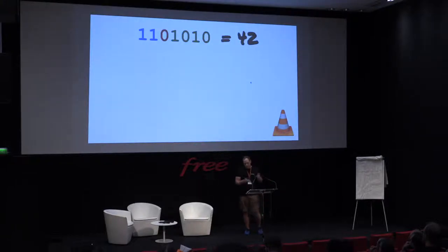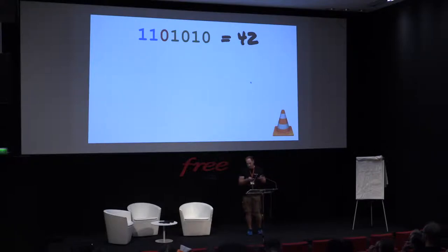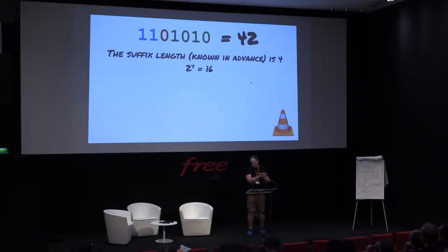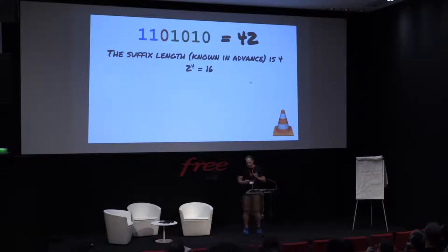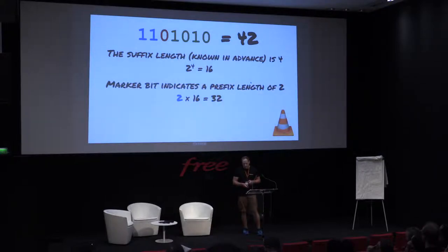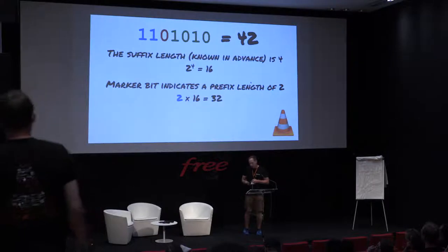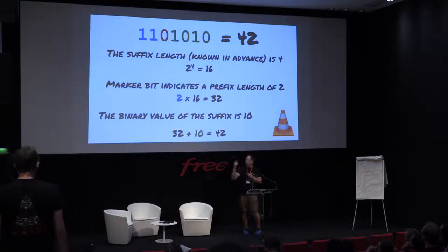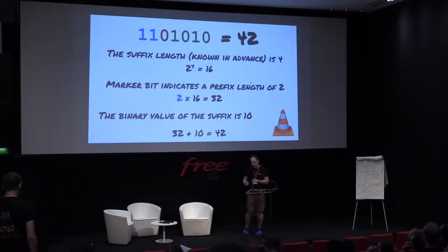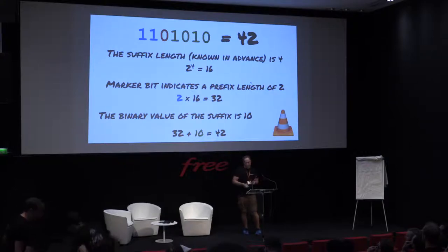With an example: if you start with the code 42, what happens is you get your two one-bit prefix bits, and then your marker bit. You know you have two to the four, which is 16, which is going to be your quotient. Then you multiply two with 16, which gives you 32, and then you add 10, which is the binary part at the end. That gets you to 42. That's how the classic Golomb works.